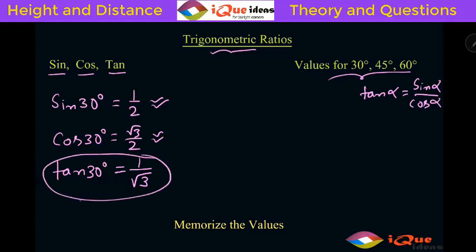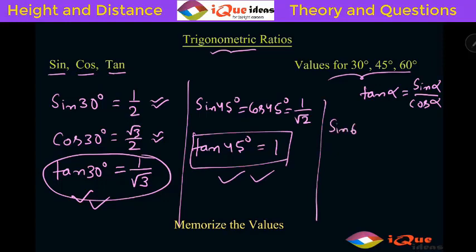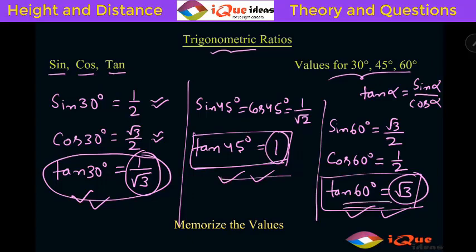Tan 45° equals sin 45° divided by cos 45°, and since both are equal, the ratio is 1. For 60°: sin 60° is √3/2, cos 60° is 1/2, and tan 60° is √3/2 divided by 1/2, giving us √3. So focus on the values of tan: tan 30° is 1/√3, tan 45° is 1, and tan 60° is √3. These are the most important values used directly in height and distance questions.